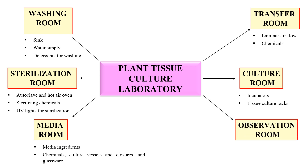The next area is the observation room. This is the room in which you will observe your experiments and data. It must have a microscope, because you will definitely need it during observation. These are the typical layout components of a plant tissue culture laboratory.